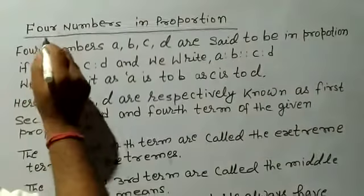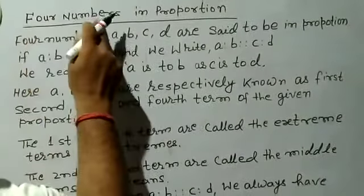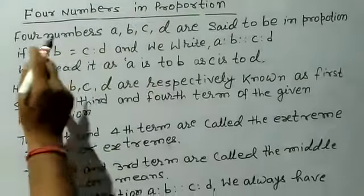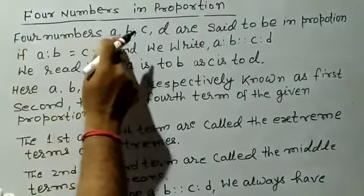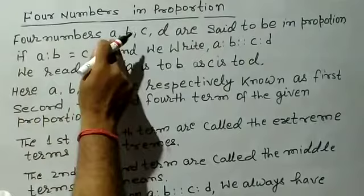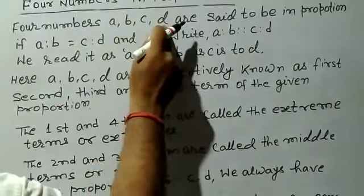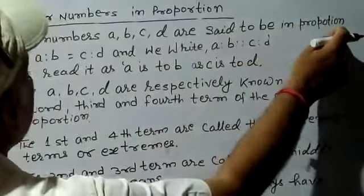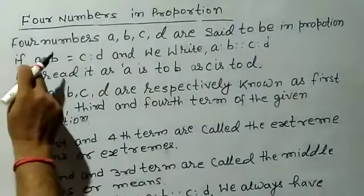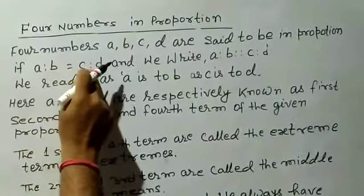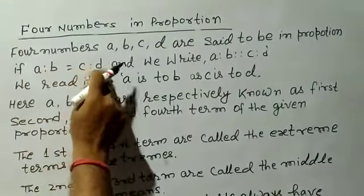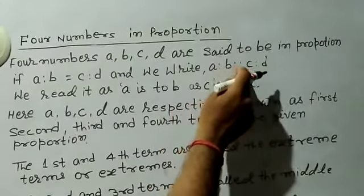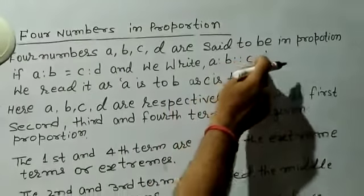Four numbers A, B, C, D are said to be in proportion if A ratio B is equal to C ratio D, and we write A ratio B proportion C ratio D.